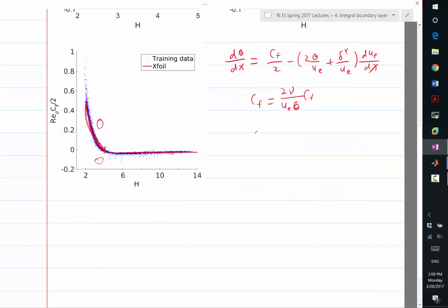Oh, sorry. 2 nu times Cf divided by ue theta, did I miss anything? 2 nu, okay, that's right. Okay, and delta star is equal to h times theta, so let's put them in.